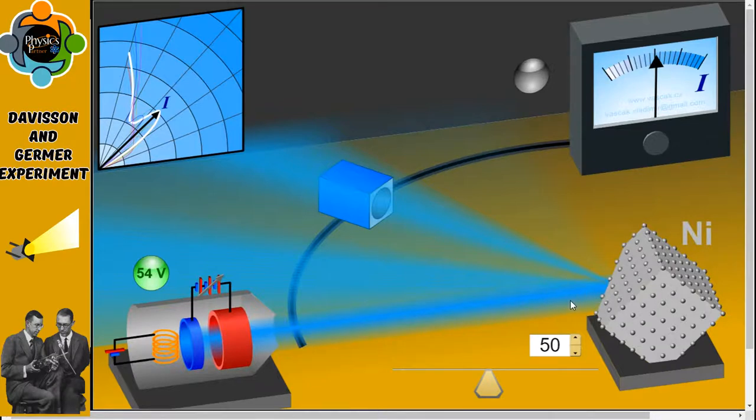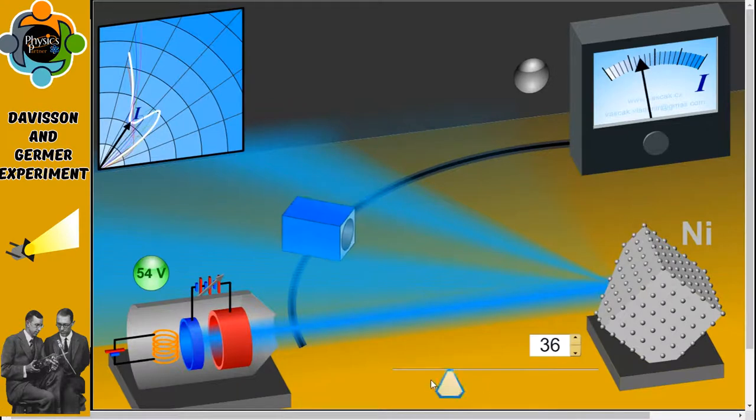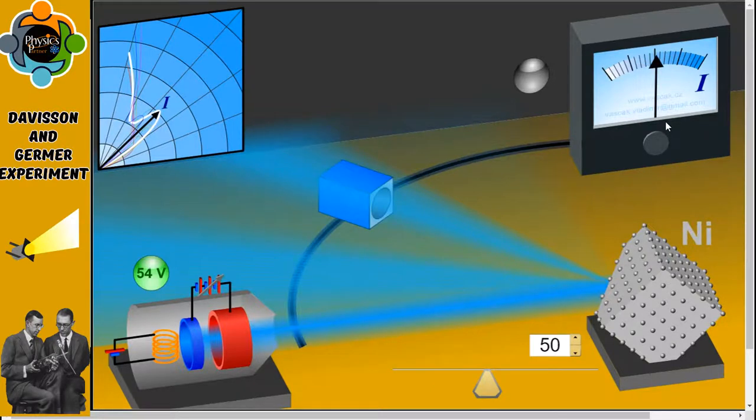This leads to scattering of electrons in various directions. The intensity of the electron beam is measured by an electron detector which is connected to a sensitive galvanometer to record the current and can be moved on a circular scale. You can see that with changes in the angle, the reading on the galvanometer changes, showing the current.